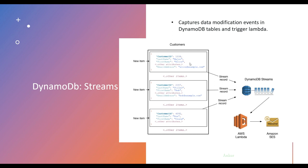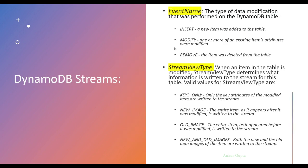DynamoDB streams help capture all the modifications, creations, and deletions that we do in our table at item level, and this happens in almost real time. You can capture these events and trigger a Lambda function based on these events, just like we have been triggering HTTP events, and then capture the data and send an email. In our example, we will try to capture the insert event whenever we create a new user and send an email to the user.